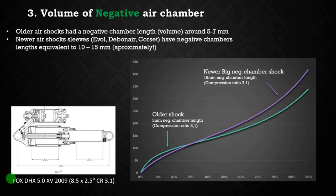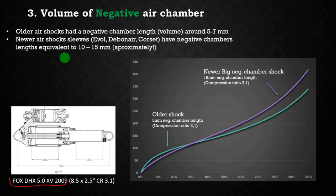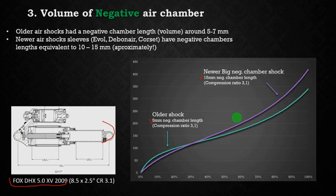Looking at older shocks, their negative air chamber length is about 5 to 7 millimeters, while newer air shock sleeves like the Debonair, Corset, and similar designs have a length equivalent to 10 to 15 millimeters. This graph compares both: an older shock with a 5mm negative chamber and a newer shock like an Evol or Corset with a bigger negative chamber.